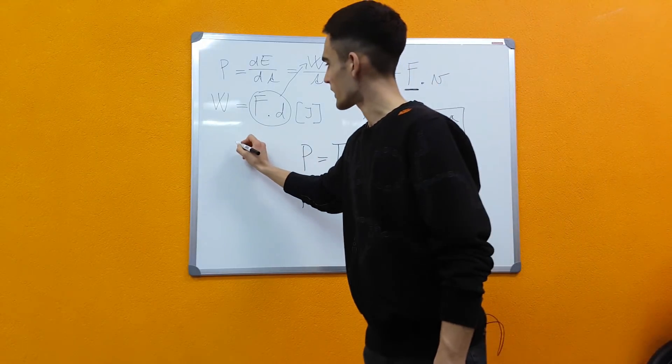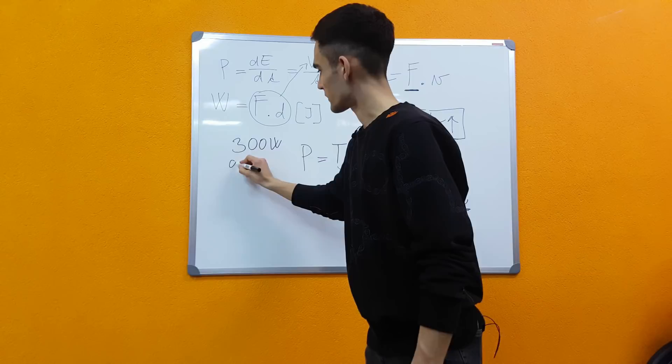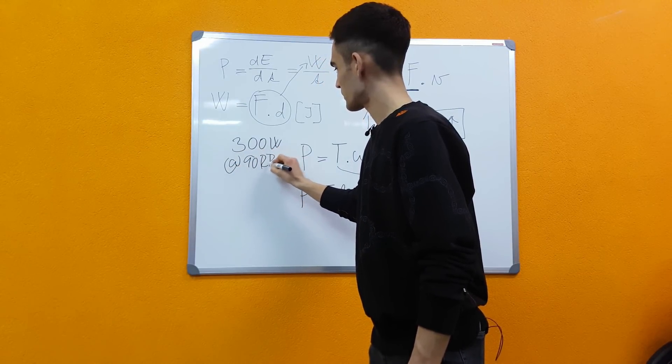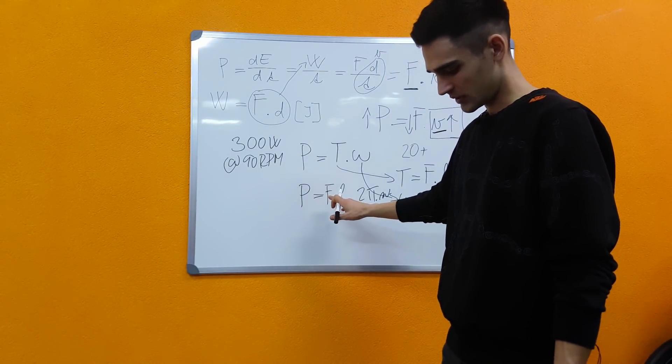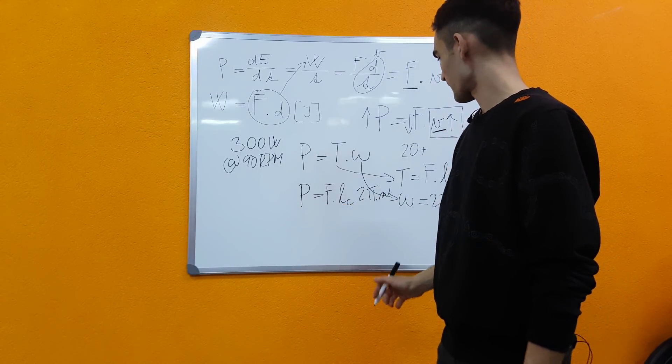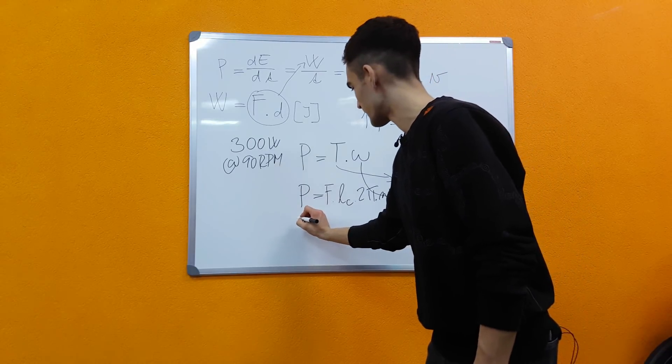So let's say we're riding at 300 watts at 90 rpm. What is the force that we need to apply to the pedals, assuming of course that this is a constant force?